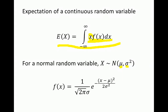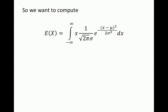For a normally distributed random variable X with mean μ and standard deviation σ, we have the probability density function f(x). We substitute this expression for f(x) into the integral to compute the expectation of X where X is normally distributed with mean μ and standard deviation σ.